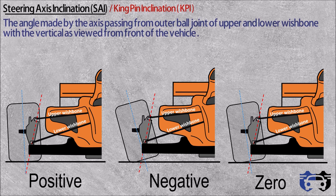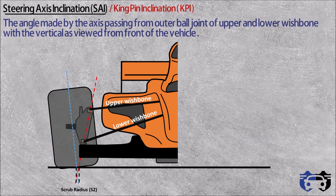Scrub radius can be positive, negative, or zero according to the requirements of the designer. Positive camber also produces self-aligning torque — as the wheel rotates about the inclined steering axis, it causes a pushing of the tire on the ground, and the reaction forces will make the tire revert back to the straight position due to self-aligning torque. So these are the benefits of having positive camber.